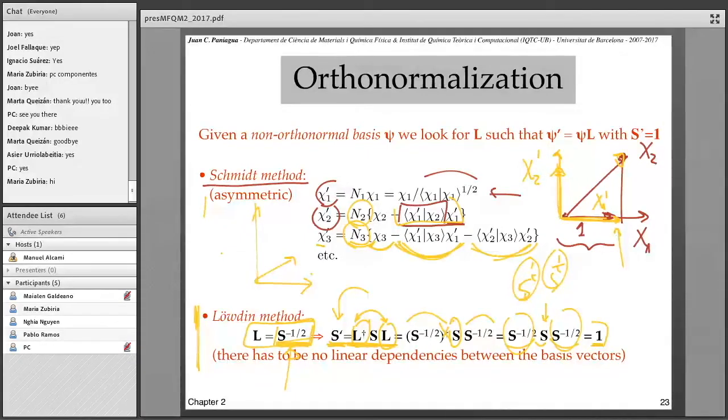Well, we started speaking about orthonormalization. And I told you that Löwdin method is the most democratic method. Because it treats in the same way all the elements. And so you obtain a basis set in which the new element resembles the old one as much as possible. At least the modification is similar for all of them.